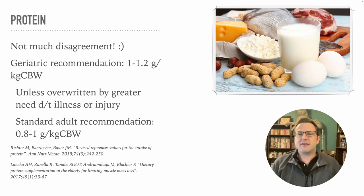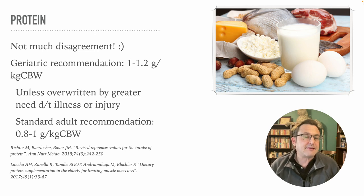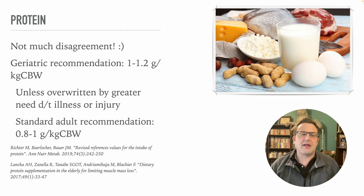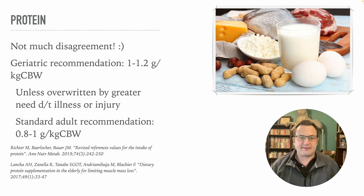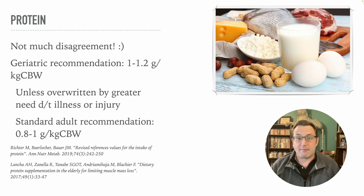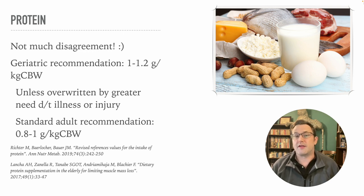There is a little debate on whether you should use actual current body weight if the patient is obese. Some people will use an adjusted body weight, and there's more than one way to do that. The general consensus is better to overshoot than under. Remember that younger adults average 0.8 to 1 gram per kilogram, and if a disease state overwrites general needs — like hemodialysis — we go with the disease-state needs instead.